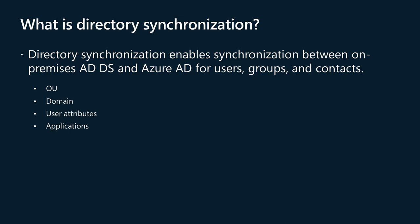However, with Azure AD Premium features, some attributes replicate in the other direction. For example, you can configure Azure to write passwords back to an on-premises ADDS, and to groups and devices from Azure AD. If you don't want to synchronize your entire on-premises ADDS, directory synchronization for Azure AD supports limited filtering and customization of attribute flow based on the following values: OU, domain, user attributes, and applications.